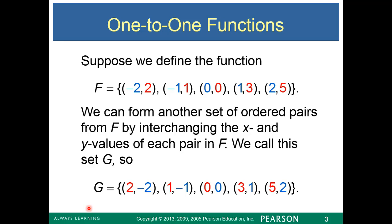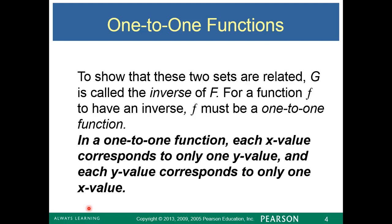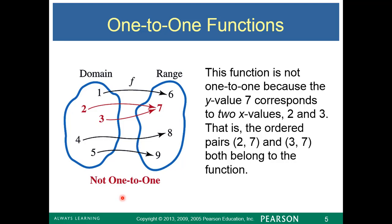That doesn't happen all the time. To show that these two sets are related, g is called the inverse of f. For a function f to have an inverse, f must be a one-to-one function — they're directly related. If a function is one-to-one, then it must have an inverse. In a one-to-one function, each x value corresponds to one and only one y value, and each y value corresponds to only one x value. It goes both directions.